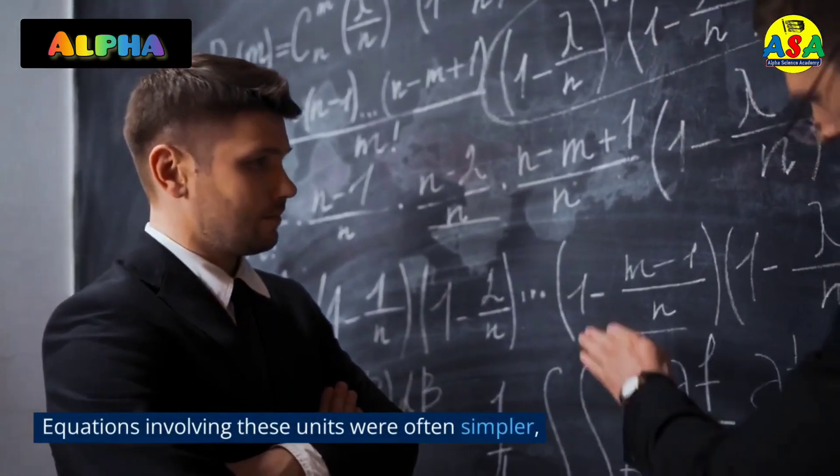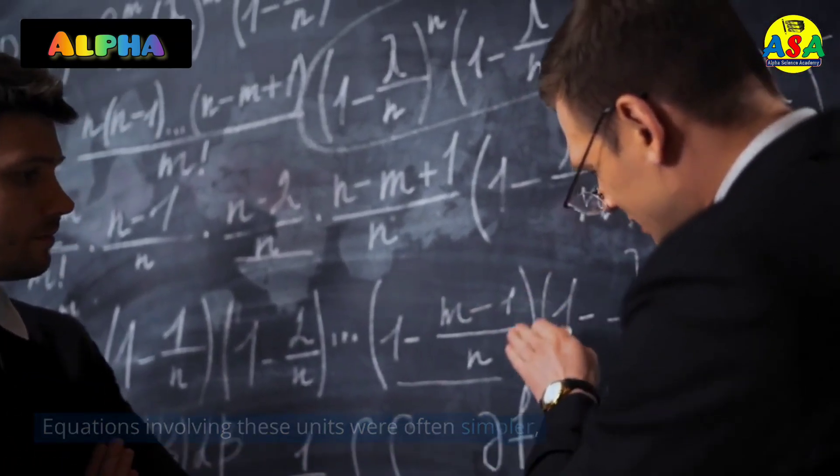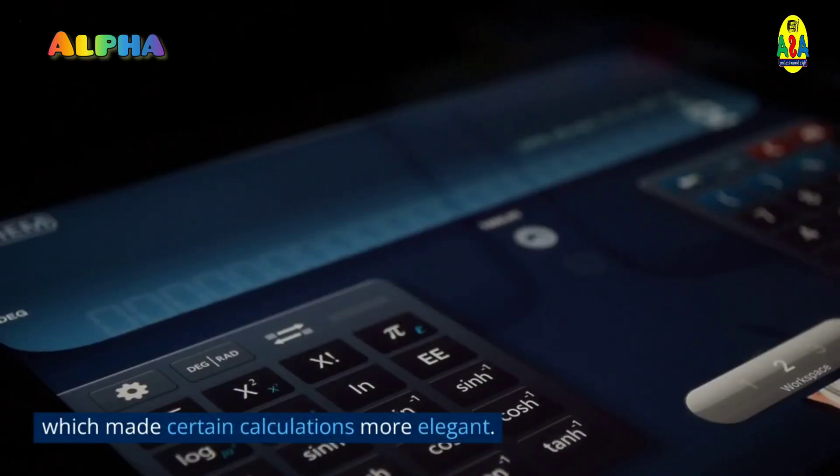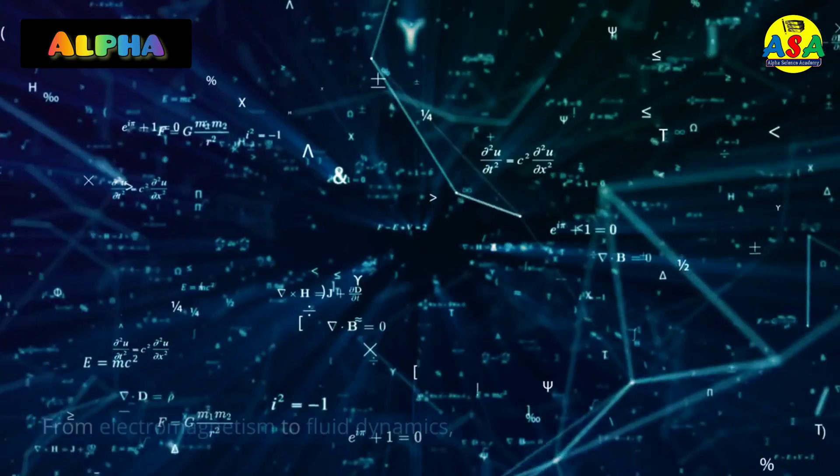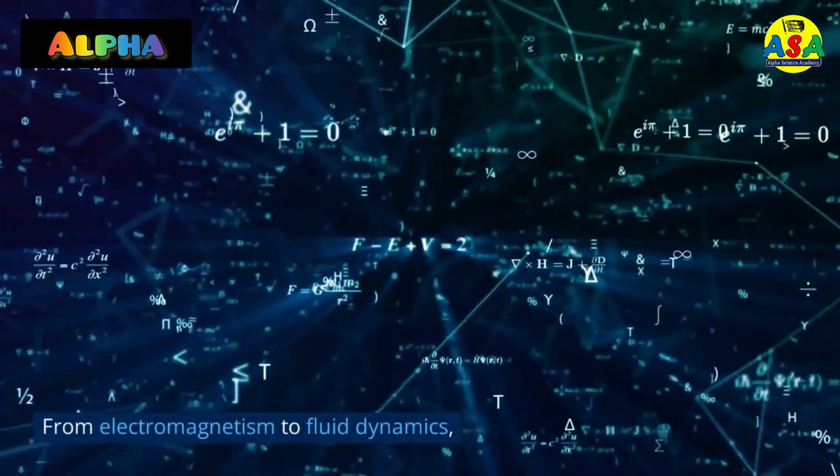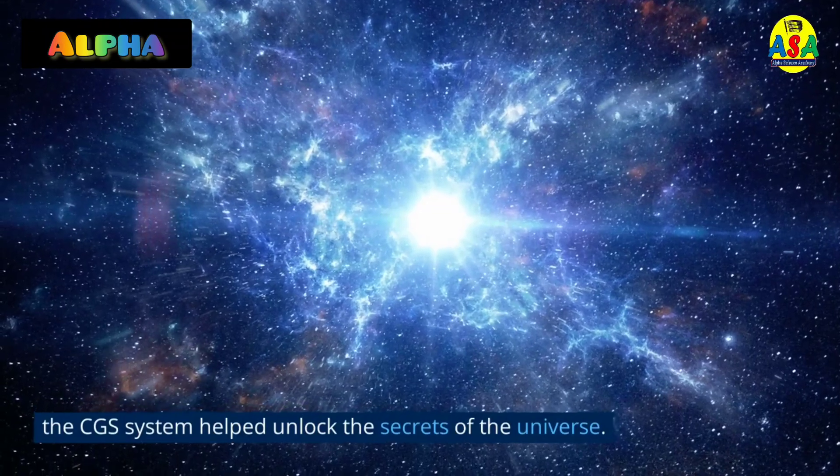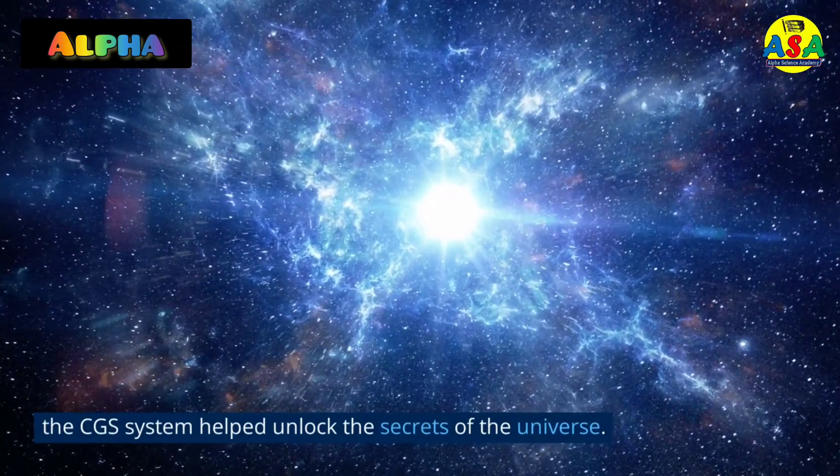Equations involving these units were often simpler, which made certain calculations more elegant. From electromagnetism to fluid dynamics, the CGS system helped unlock the secrets of the universe.